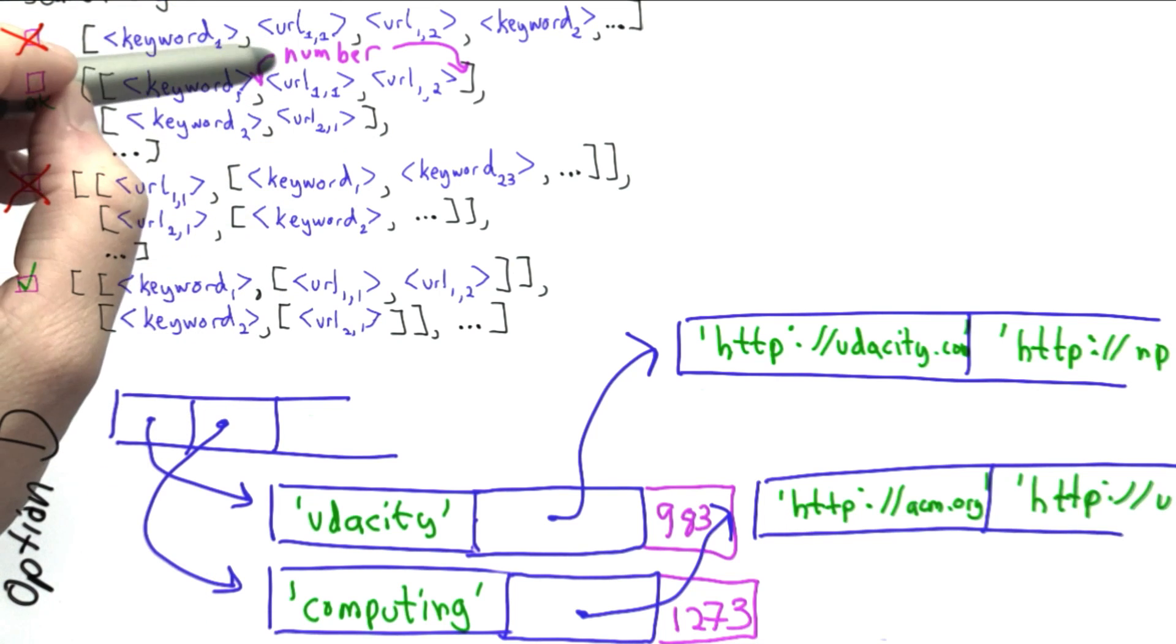Well, then we have the problem of we've got to find where the number is. There are easy ways to find the last element in a list, but it's going to make things much more complicated, and if we start adding more and more things, we're going to have a hard time keeping track of everything.